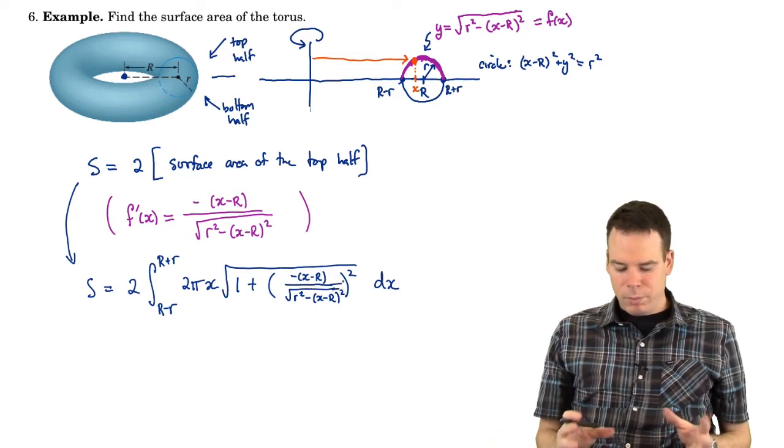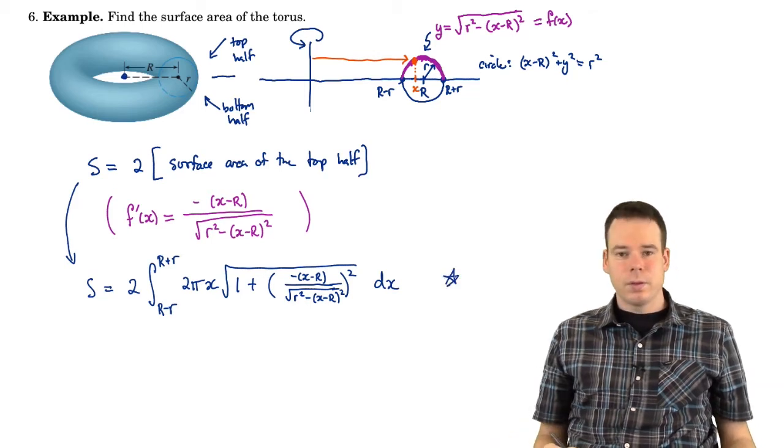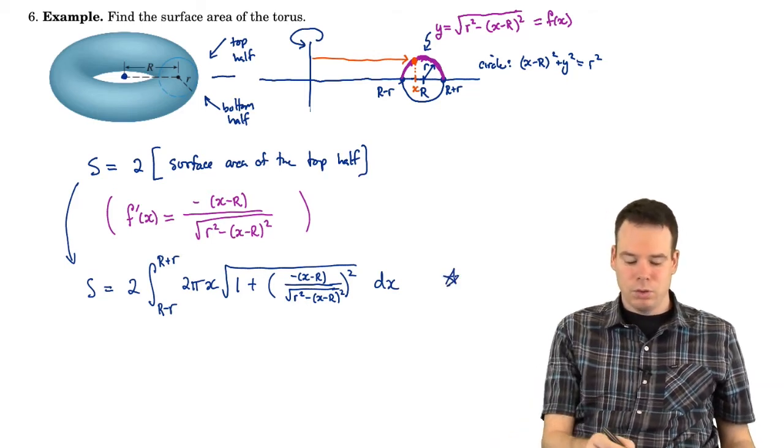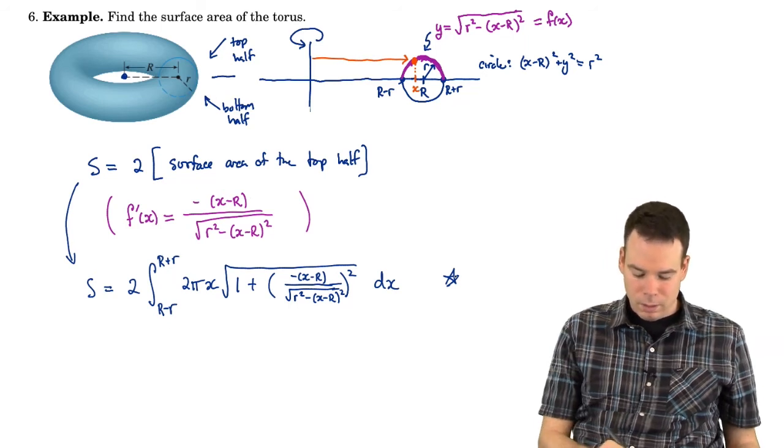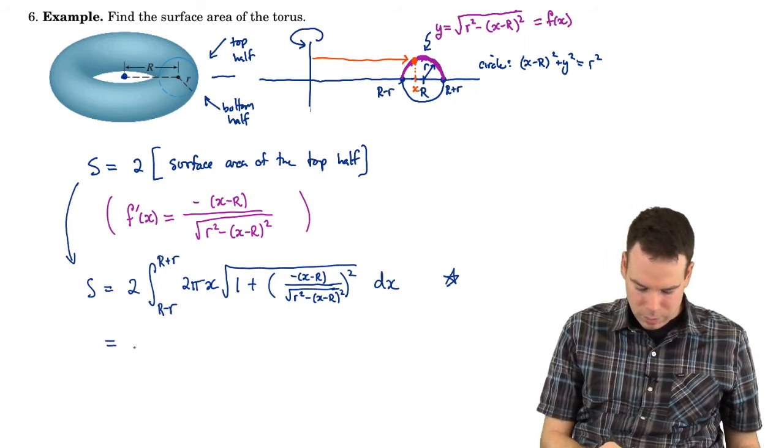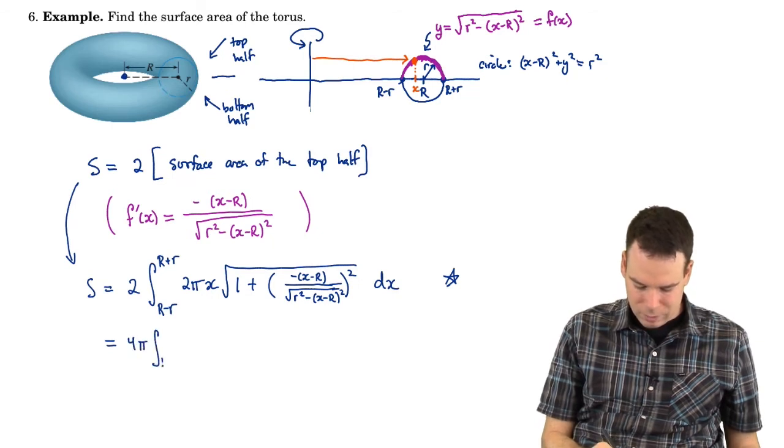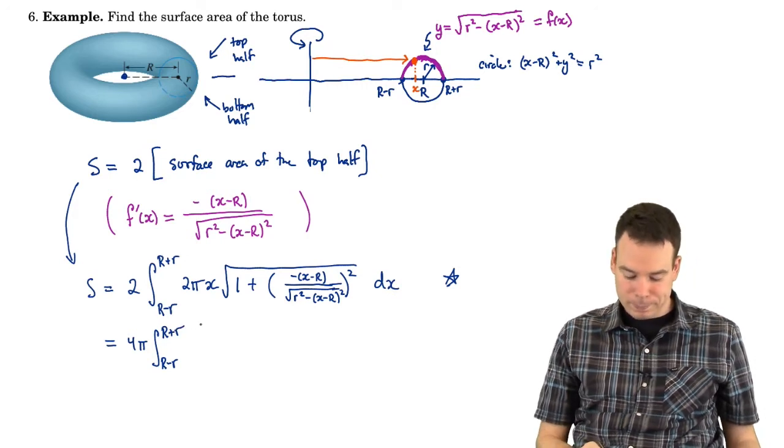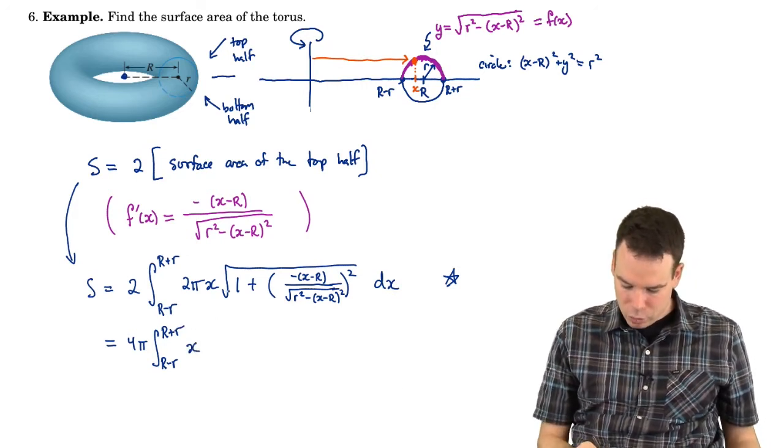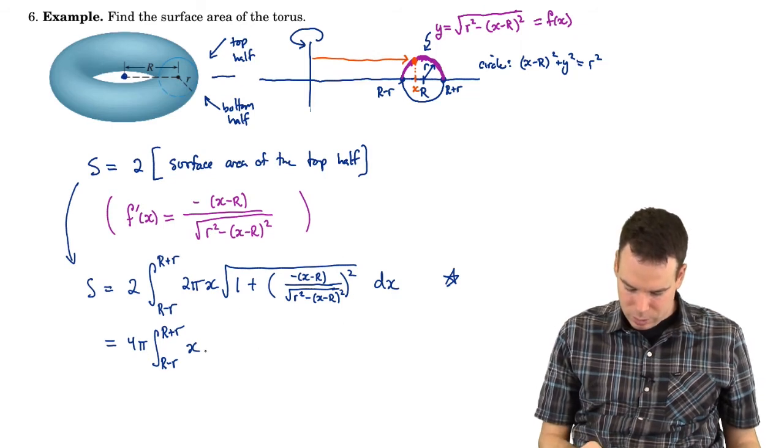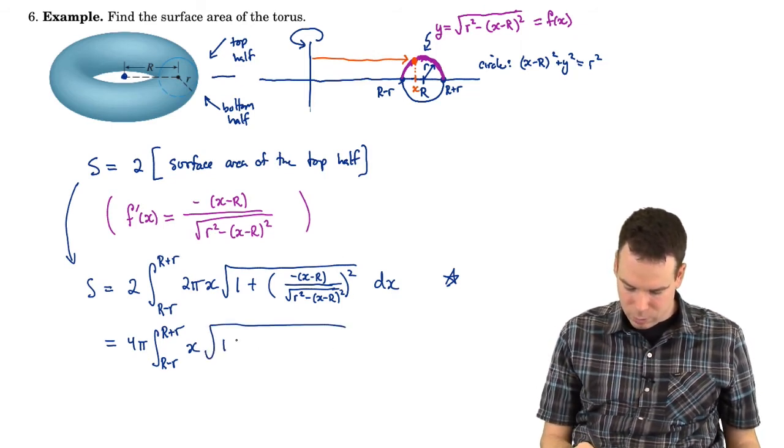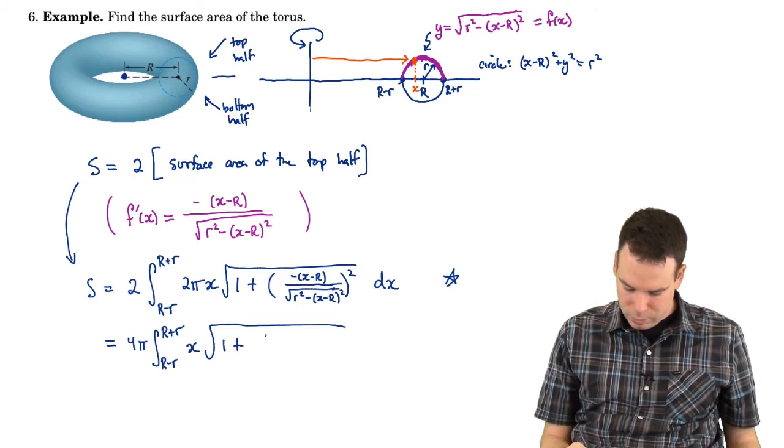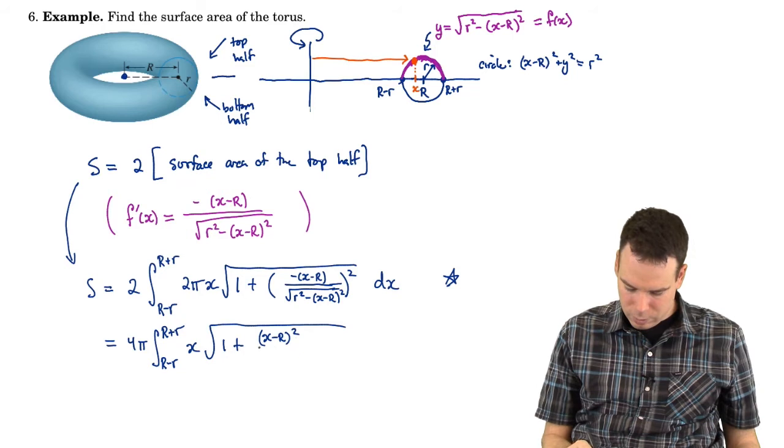So there's the integral. We've gone through all the work, set up the problem. Now we've got an integral. This is the integral that gives the surface area for the torus. Now let's go ahead and work it out. So I've got 2π times 2, that's 4π. This becomes x√(1 + (x - R)²/(r² - (x - R)²)) dx.